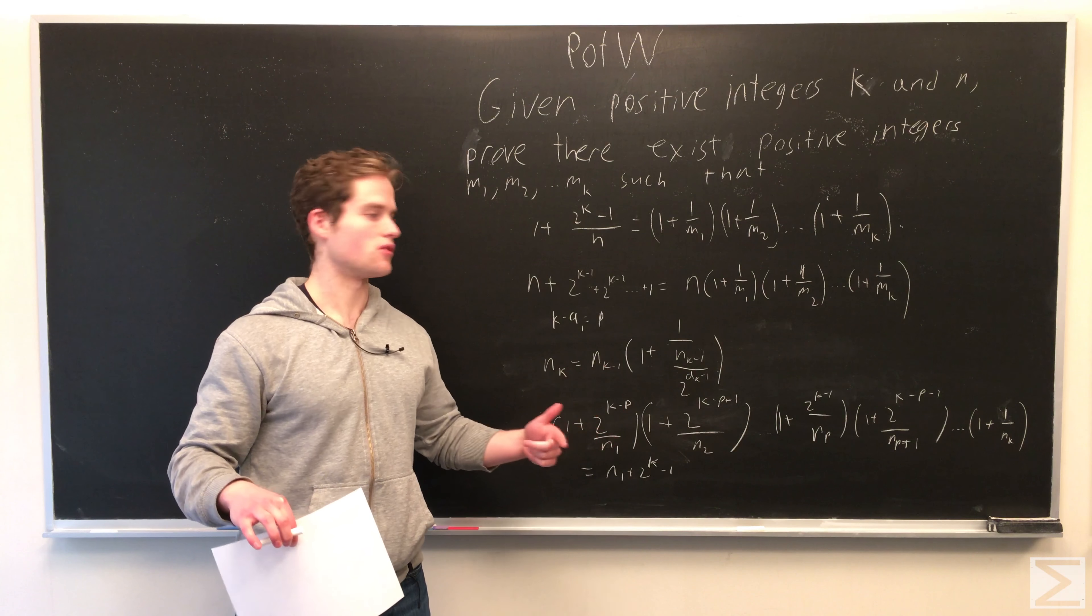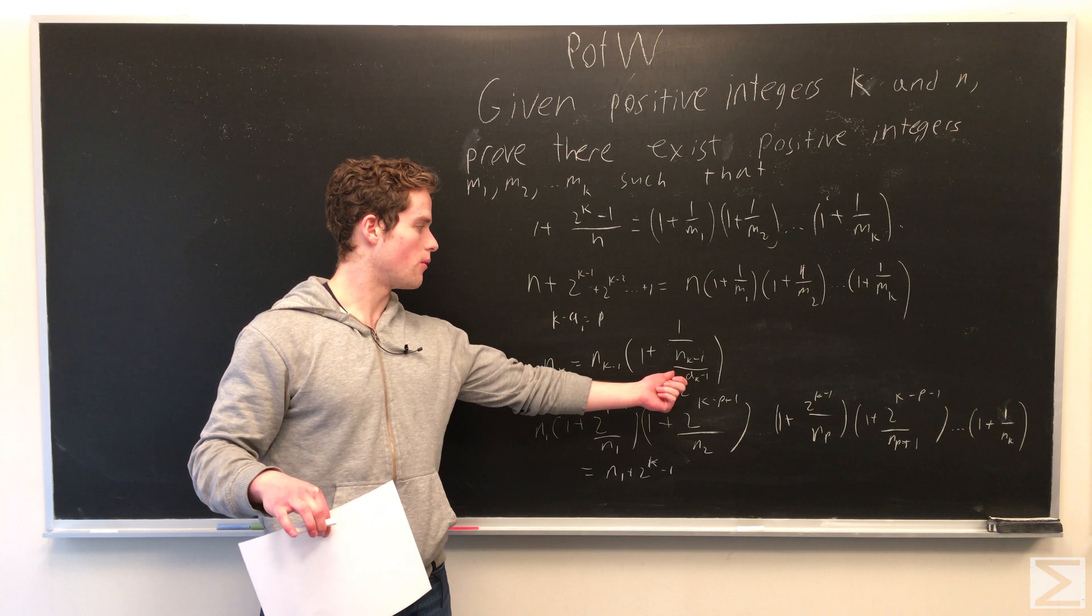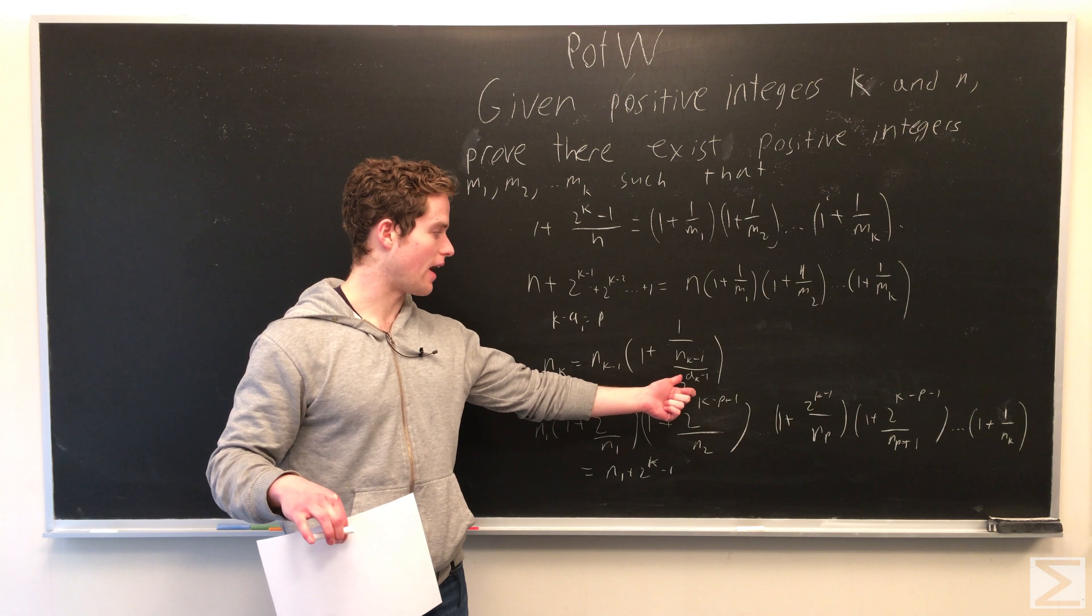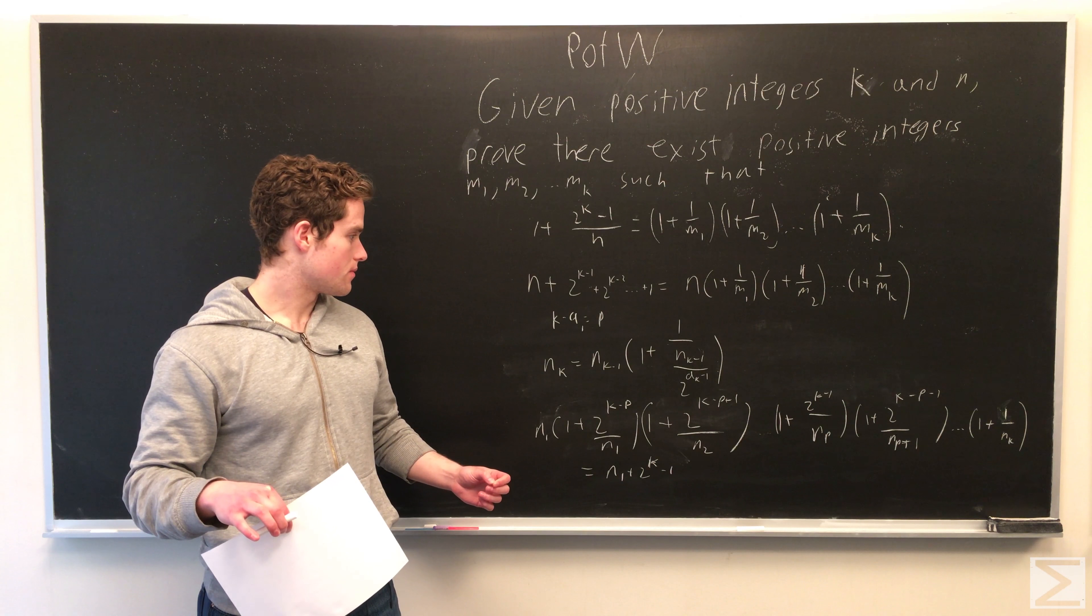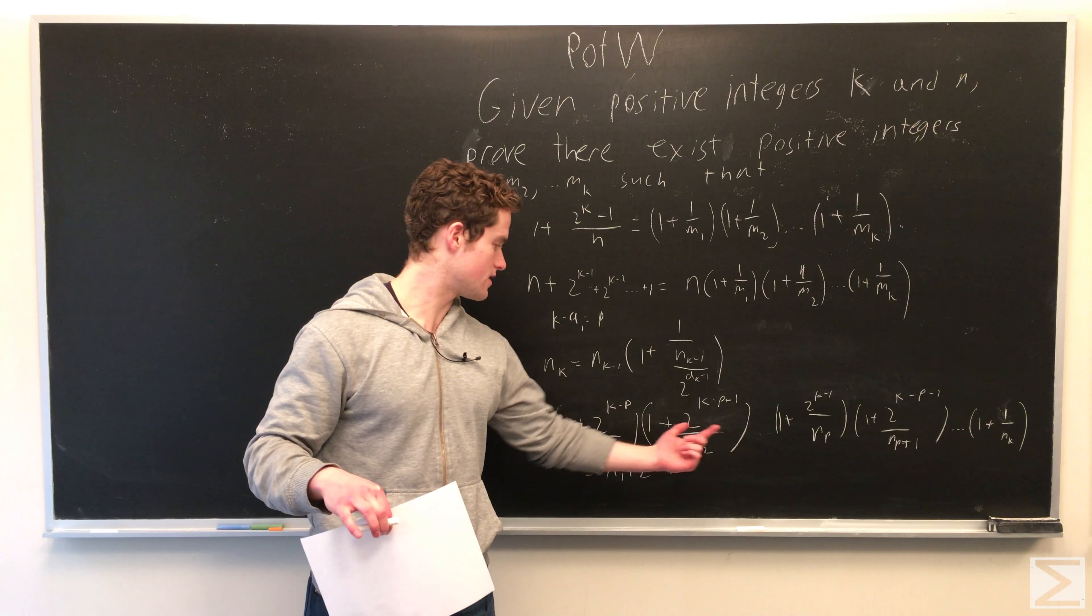We're defining n1 and n2 recursively. nk equals nk minus 1 times 1 plus 1 over nk minus 1 over 2 to the ak minus 1. And so we can proceed like this, each one of these.